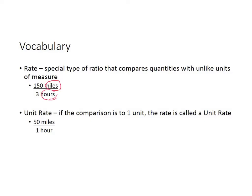Unit rate, if the comparison is comparing so much to one unit, then the rate is called a unit rate. 50 miles per one hour is a unit rate because it's telling you how fast you're going in one unit, in this case, one hour.